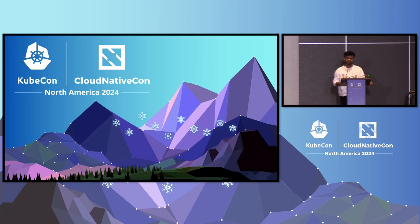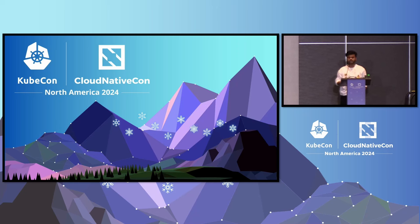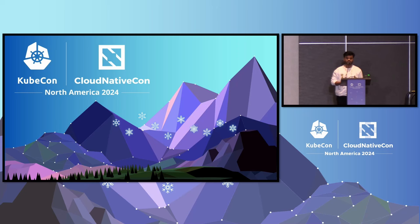Before getting into the meaning of the RV part, I really wanted to talk about Storage Version Migrator. Storage Version Migrator is an alpha API that we released in Kubernetes 1.30. What it essentially does is it will try to migrate any Kubernetes resource to its desired storage state version.